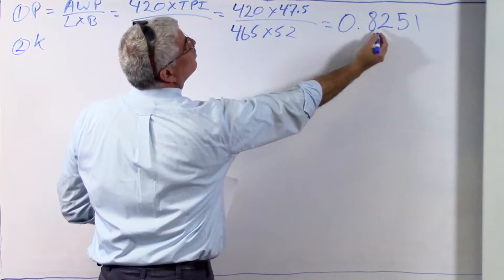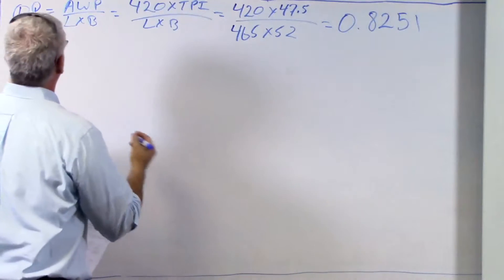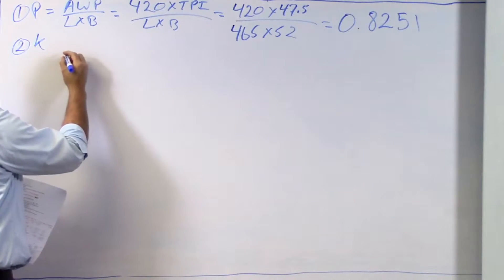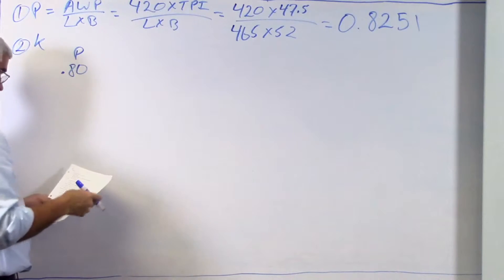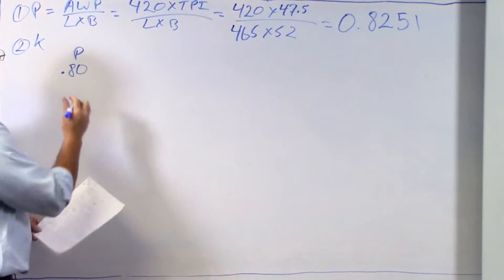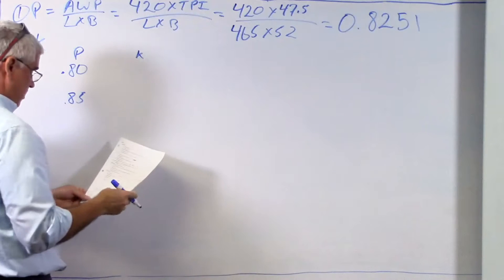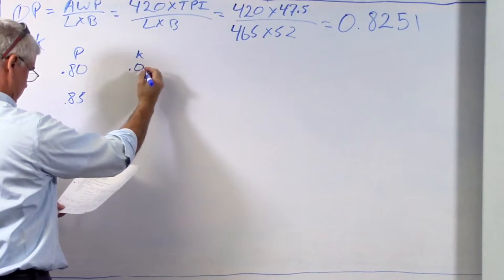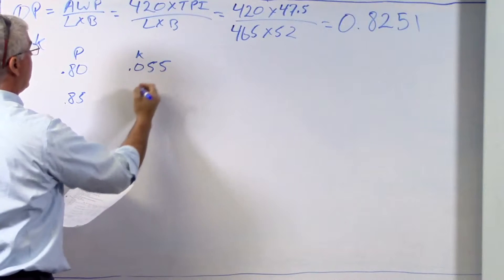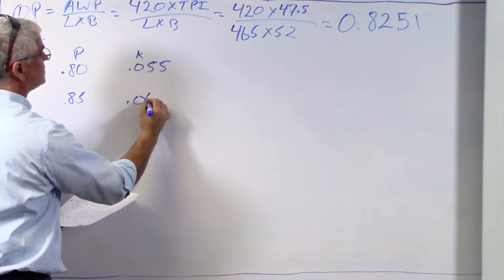Well, this is the water plane coefficient, also known as p. And if you look at that table, the p, you can see there's a 0.80. And below that, there's a 0.85. And for k, we have 0.80, the corresponding k is 0.055. And the corresponding k for 0.85 is 0.062.